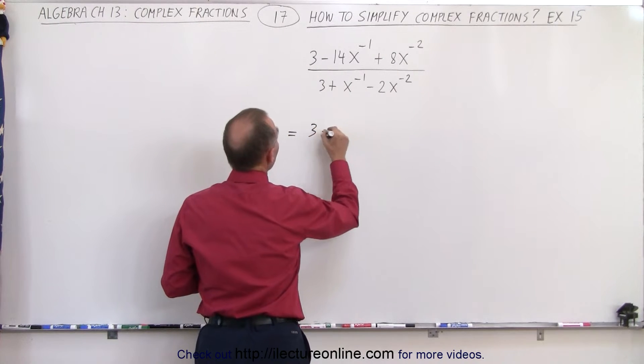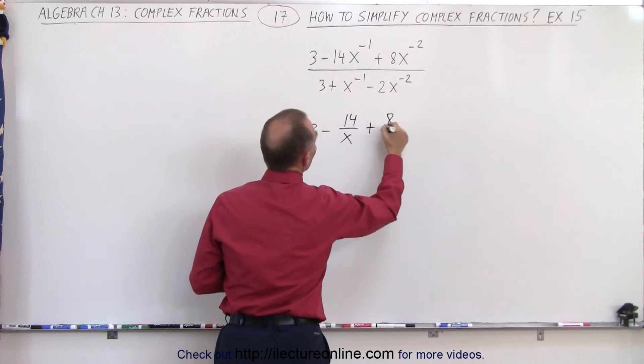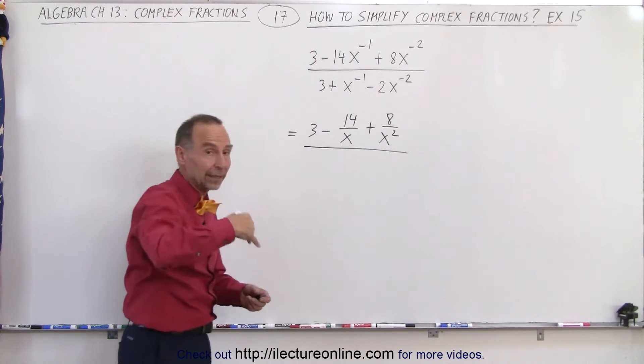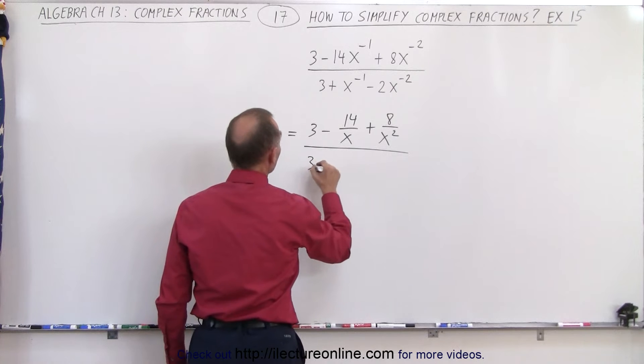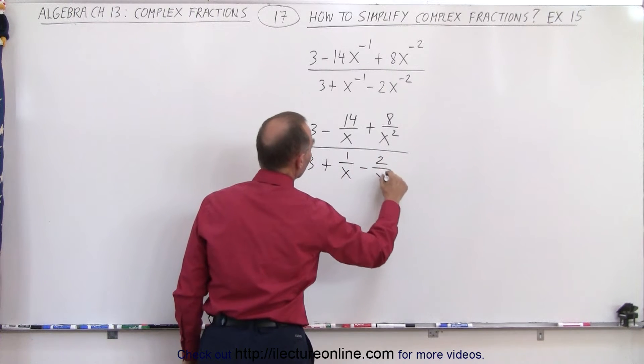This is 3 minus 14 divided by x plus 8 divided by x squared. And right away you begin to see why this is a complex fraction. In the denominator we get 3 plus 1 over x minus 2 over x squared.